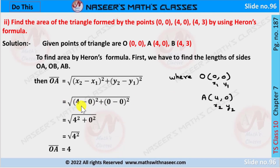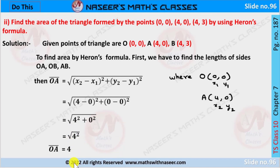We get the square root of (4 minus 0) squared plus (0 minus 0) squared. 4 minus 0 is 4 and 0 minus 0 is 0, so it becomes the square root of 4 squared plus 0 squared, which equals the square root of 4 squared. The square root and the square cancel, giving us 4. Therefore, the length of side OA is 4 units.